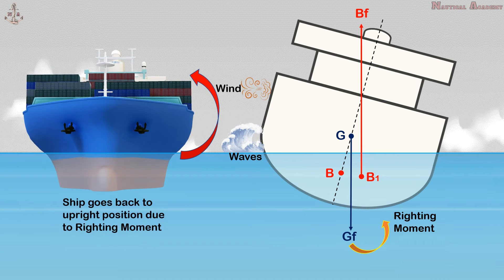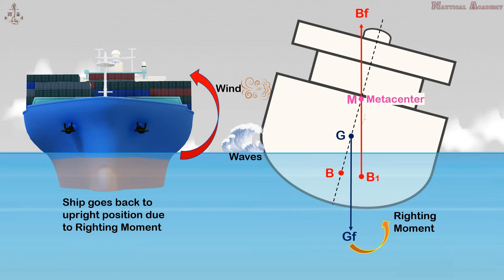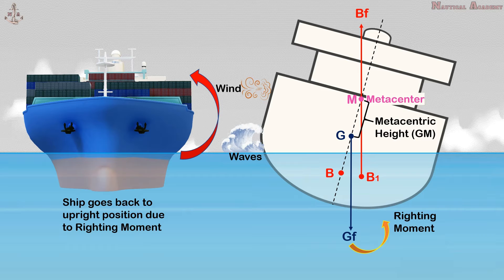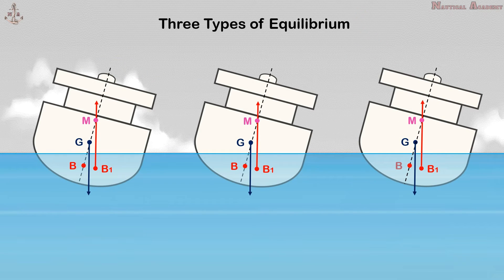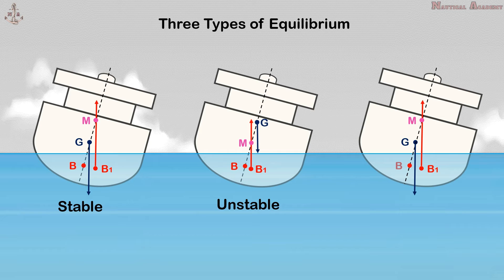The point of intersection of the upward vertical line of force through the new center of buoyancy B1 and the centerline is called the metacenter, or transverse metacenter, symbolized by capital M. The vertical distance from the center of gravity, point G, to the metacenter, point M, is called metacentric height, known as GM. The metacentric height is critical in ship stability. The ship possesses three types of equilibrium depending on the position of the metacenter: stable, unstable, and neutral equilibrium.